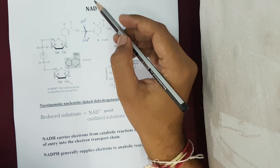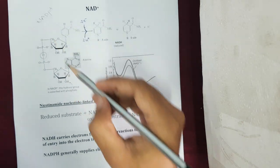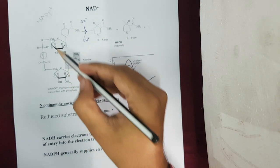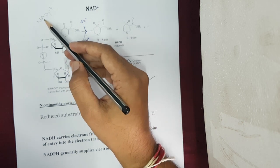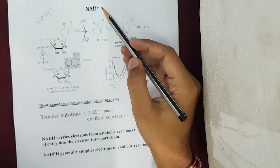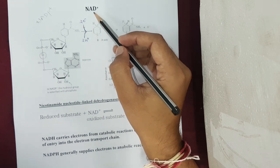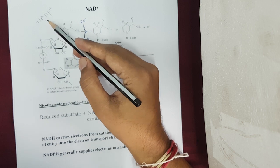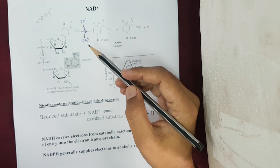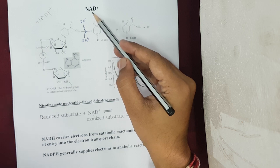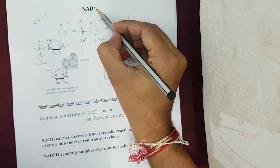Along with NAD, one more closely related structure is NADP — nicotinamide adenine dinucleotide phosphate. In NADP, an additional phosphate group is attached to the ribose sugar. The difference between NAD and NADP is just that extra phosphate group. Very importantly, NAD plays a very important role in catabolic reactions, whereas NADP plays a very important role in anabolic reactions. Since we are discussing the electron transport system, which is a crucial part of catabolism, we concentrate on NAD.